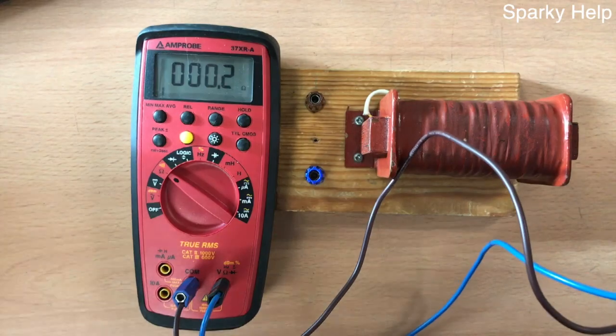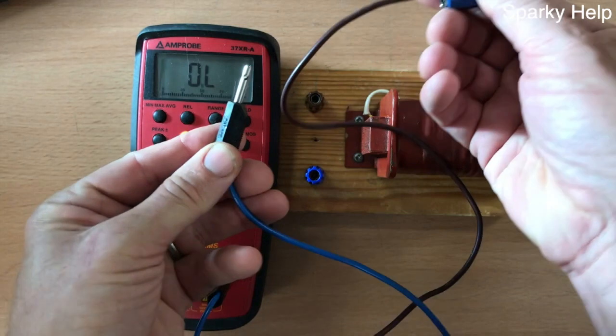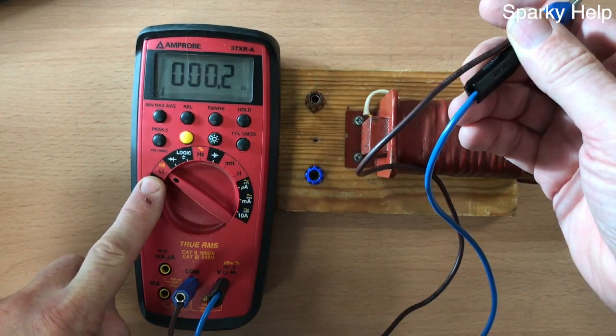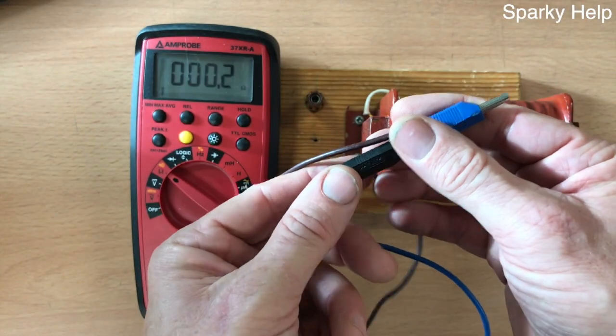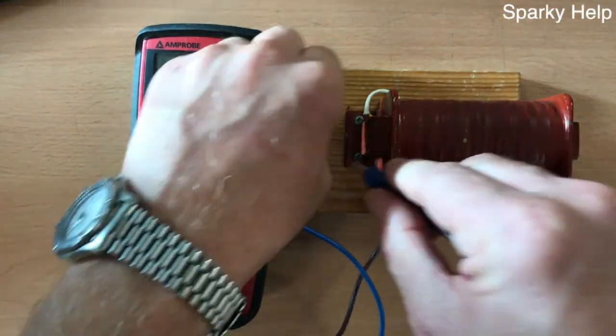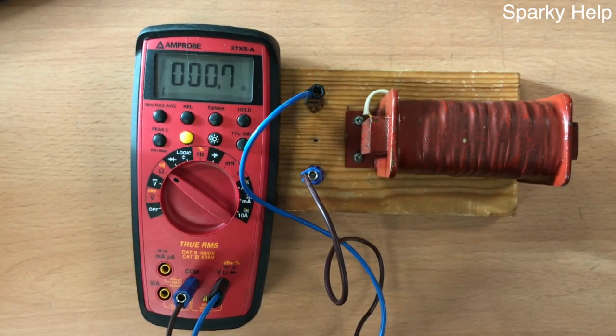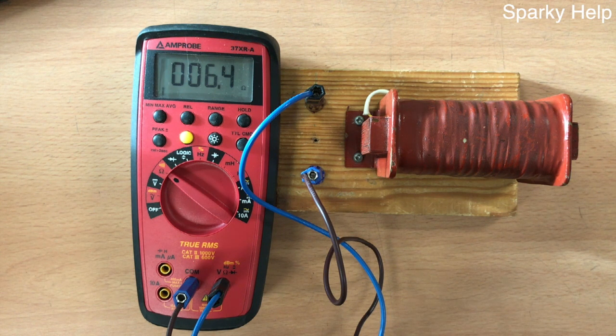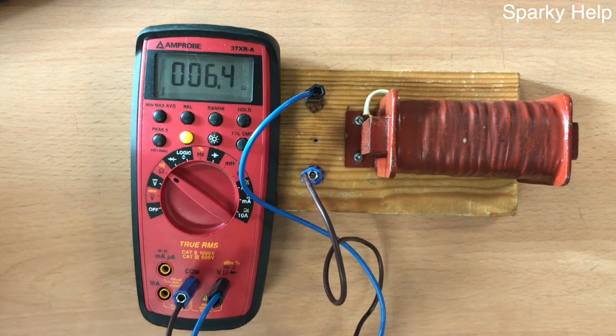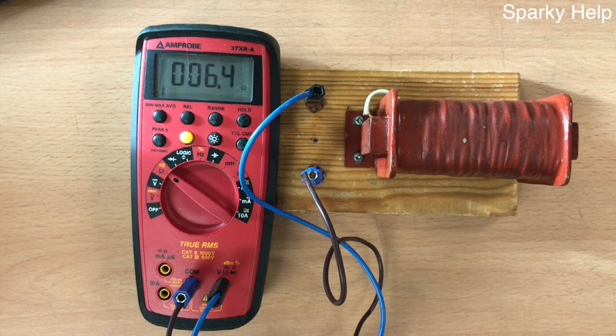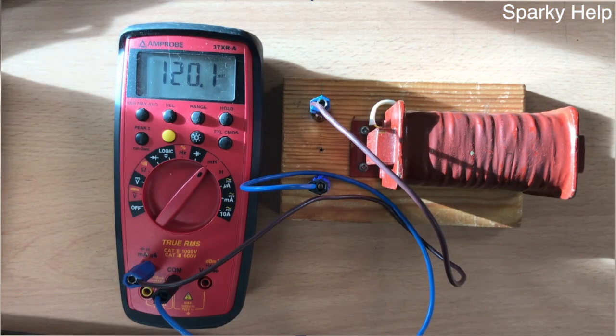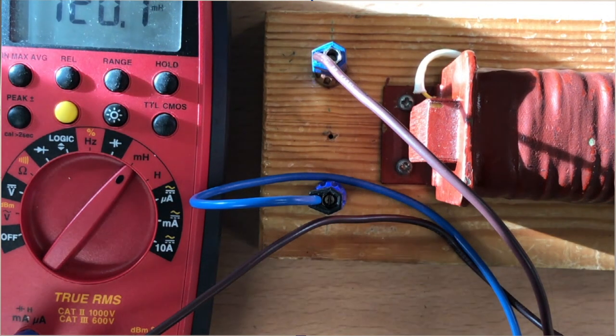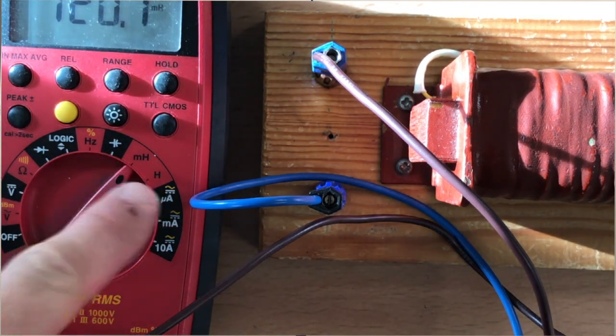Now I've done a real coil, and as you will see, I have measured its resistance and I will also measure its inductance using a multimeter. The values we get are 6.4 ohms for the resistance, and for the inductance L, we get a value which is about 120 millihenries for this particular coil.